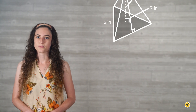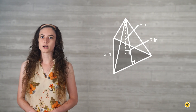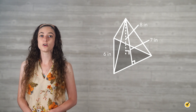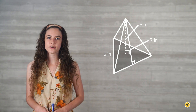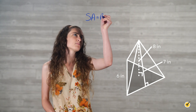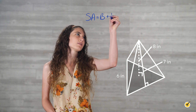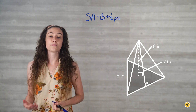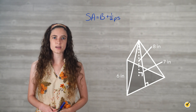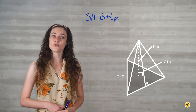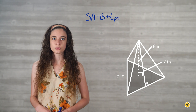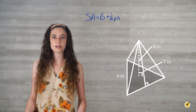Let's look at an example. A triangular pyramid has an equilateral triangle as its base with side length 6 inches and a height of 8 inches. What is the volume and surface area of the pyramid? To find the surface area, we use the formula: surface area equals big B plus one-half PS, where big B is the area of the base, P is the perimeter of the base, and S is the slant height. Since the base is a triangle, we will use the formula for the area of a triangle to find big B. Area of a triangle equals one-half BH, where B and H are the base and height of the triangular base.